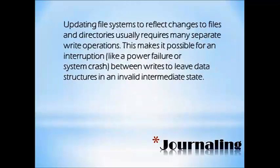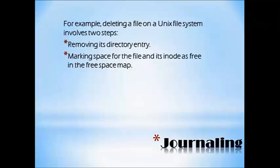Updating file systems to reflect changes to files and directories usually requires many separate write operations. This makes it possible for an interruption — like a power failure or system crash between writes — to leave data structures in an invalid intermediate state. For example, deleting a file on a UNIX file system involves two steps: removing its directory entry, then marking the space with the file and its inode as free in the free space mapping.